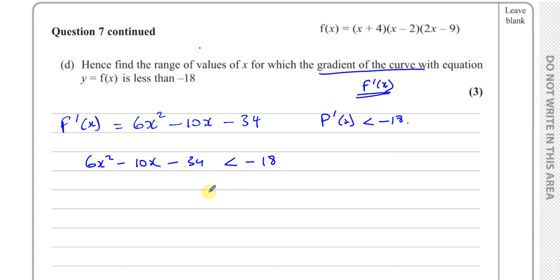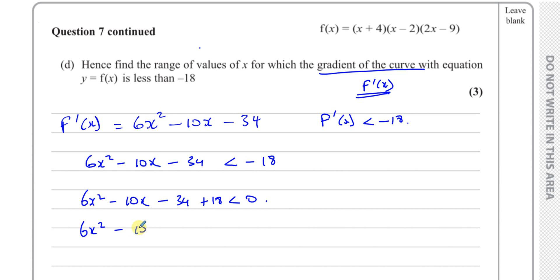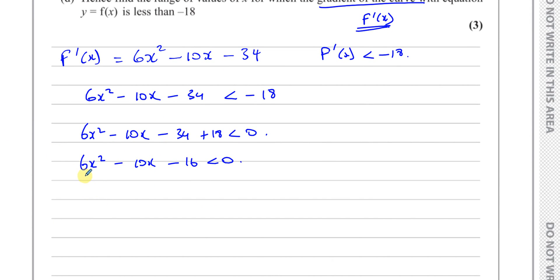To solve this quadratic inequality, rearrange so that we have 0 on the right: 6x² minus 10x minus 34 plus 18 is less than 0, which gives 6x² minus 10x minus 16 is less than 0. Dividing everything by 2: 3x² minus 5x minus 8 is less than 0. Now find the critical values by solving 3x² minus 5x minus 8 equals 0.